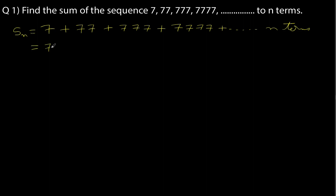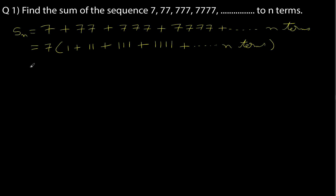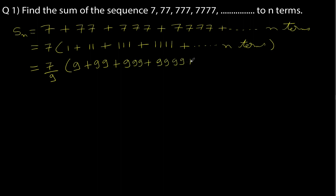One thing you could notice: if you take 7 as common, what do you get? 1 plus 11 plus 111 and so on, up to n terms. Now one thing you could do here is divide and multiply by 9. If you divide and multiply by 9, each term gets multiplied by 9, so you have 9, 99, 999 and so on up to n terms.